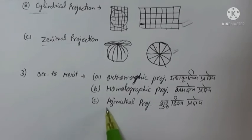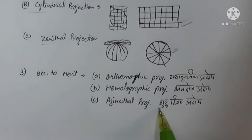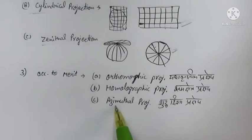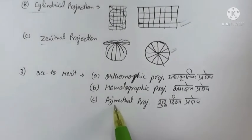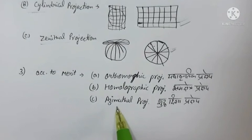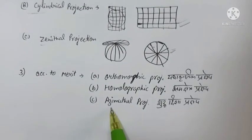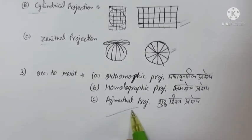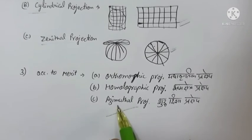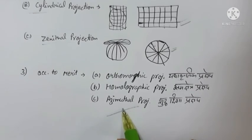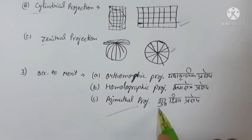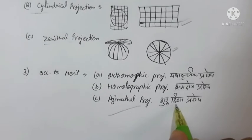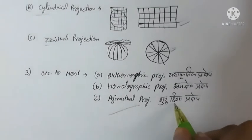Next is azimuthal projection, called shuddha disha prakshep. In azimuthal projections, the line connecting any two places on the map is the same line as on the globe, so the direction is completely perfect — therefore these are called shuddha disha prakshep or azimuthal projections.